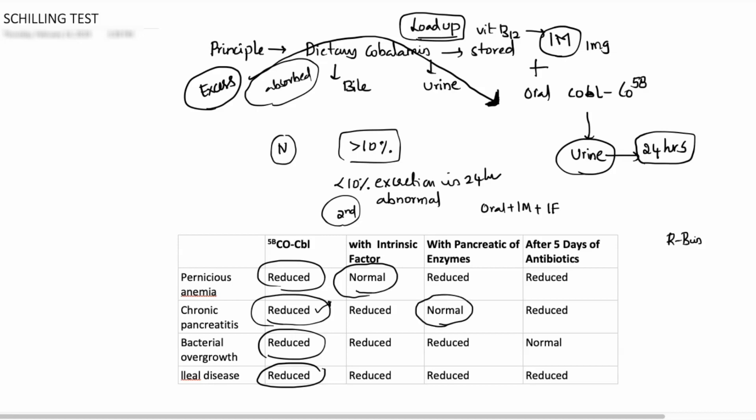In case of bacterial overgrowth, as we all know, intrinsic factor binds to the cobalamin so that the available dietary cobalamin is not used by the intestinal bacteria. In case of bacterial overgrowth or blind loop syndrome, what happens when you give five days of antibiotics, usually we give tetracyclines? The patient responds and the test becomes normal.